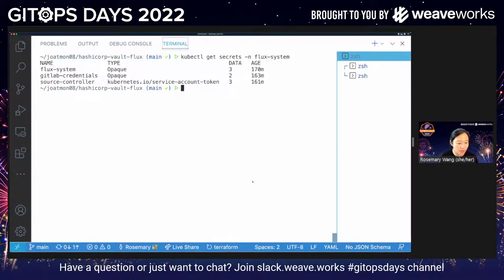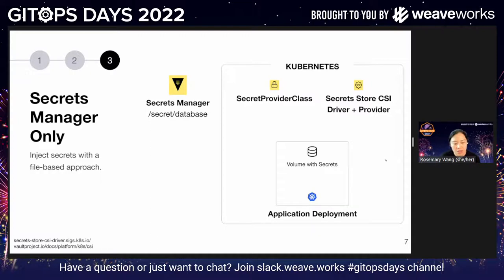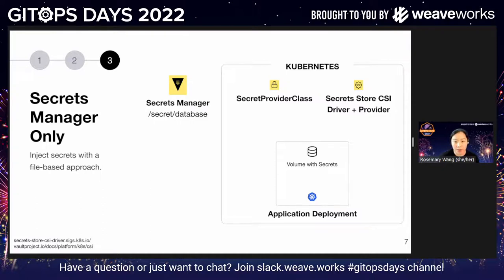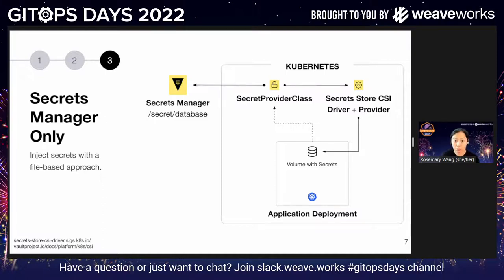Now I'll show the next pattern, which I would say is perhaps a little more disruptive at times — and that's using the secrets manager with a file-based approach. In secrets management in general, there have been two schools of thought about moving away from Kubernetes secrets. There's a whole discussion around Kubernetes secrets being plain text and how to better secure them. One solution is to use a file-based approach: inject the secret into a mounted volume in the deployment and not necessarily as a separate Kubernetes object. The secret provider class reaches out to the secrets manager and defines a volume with the secrets in your deployment.